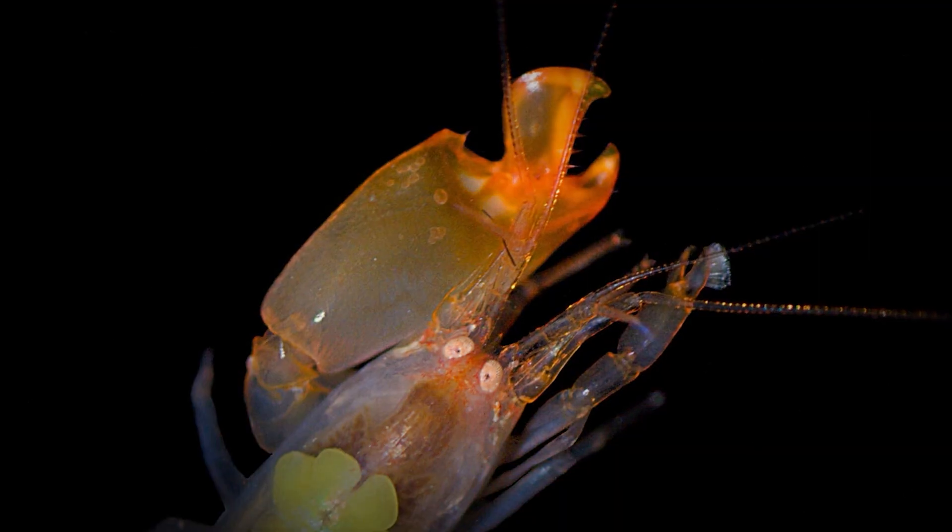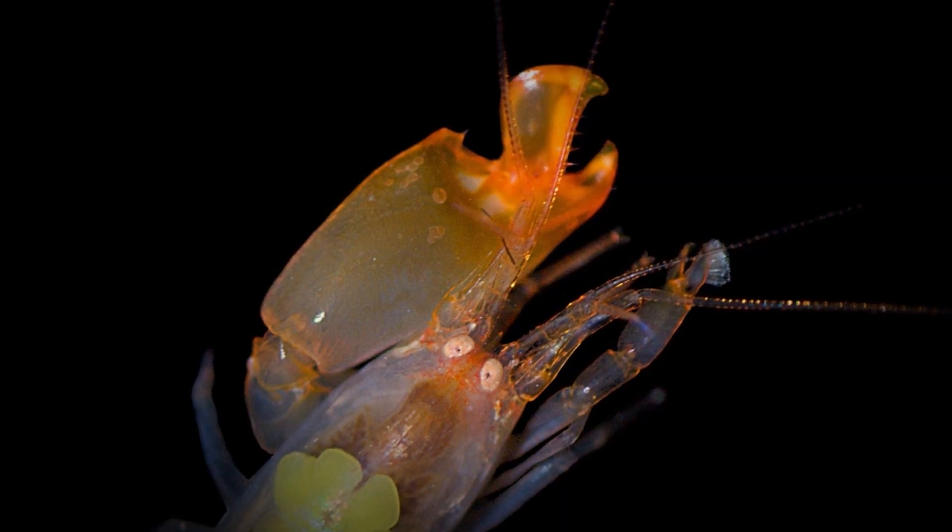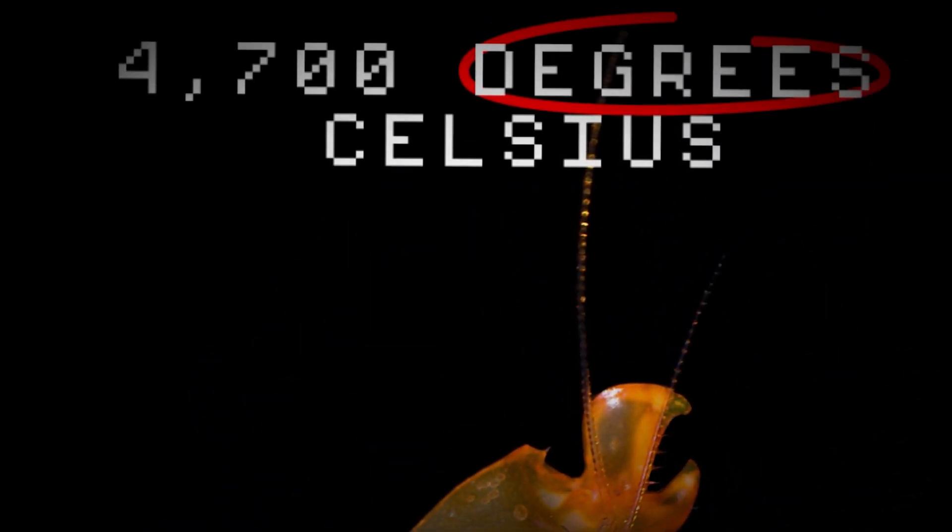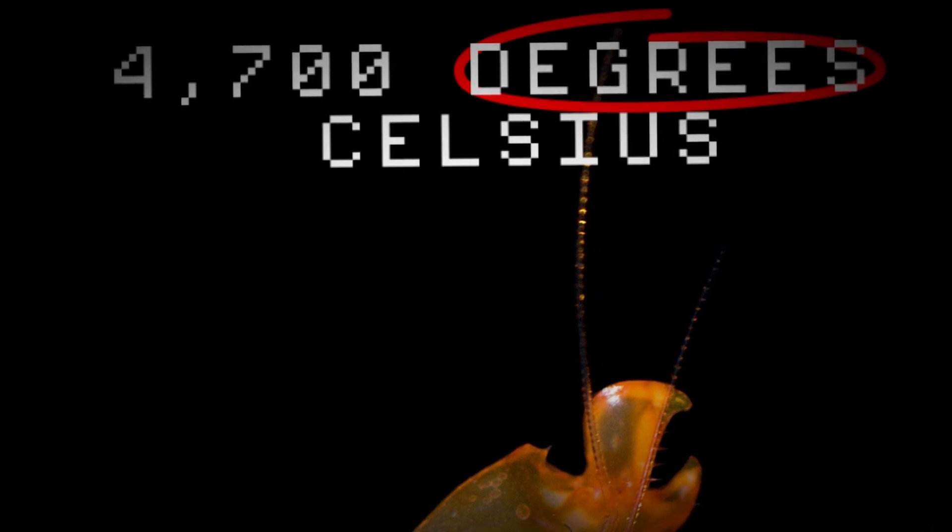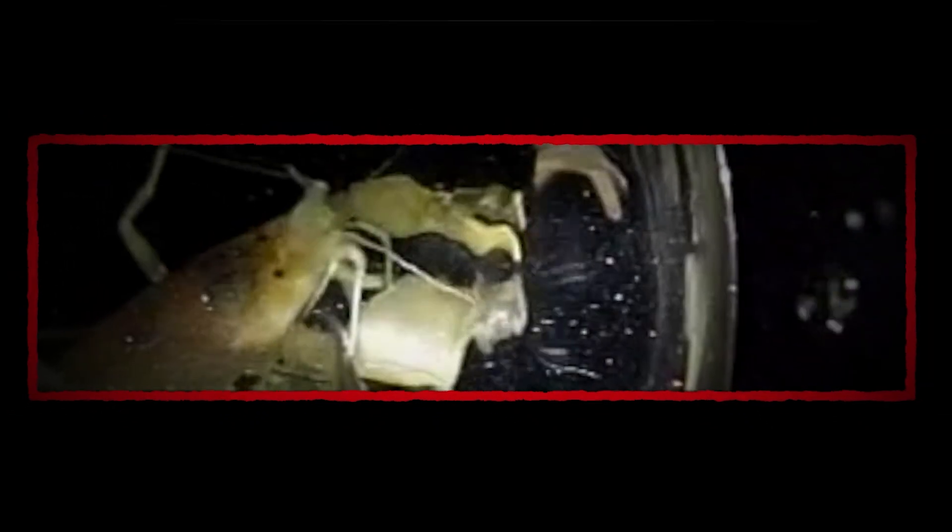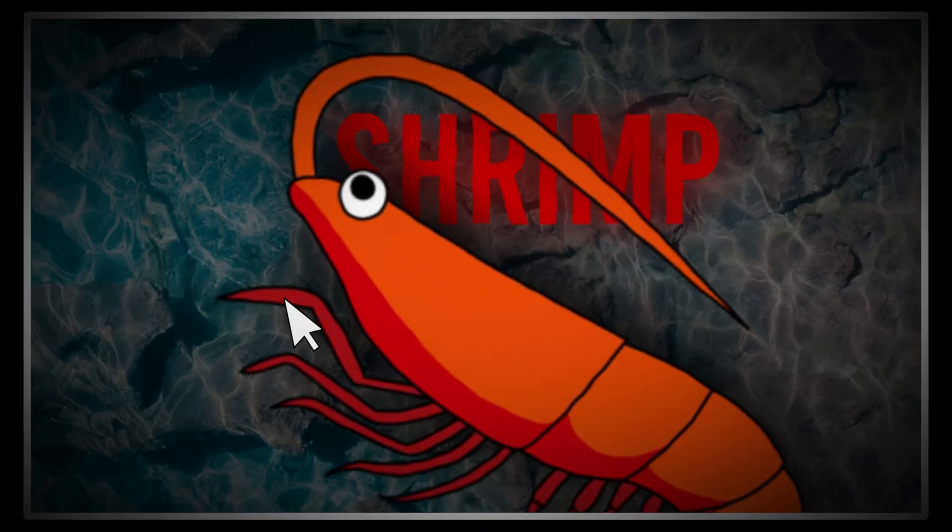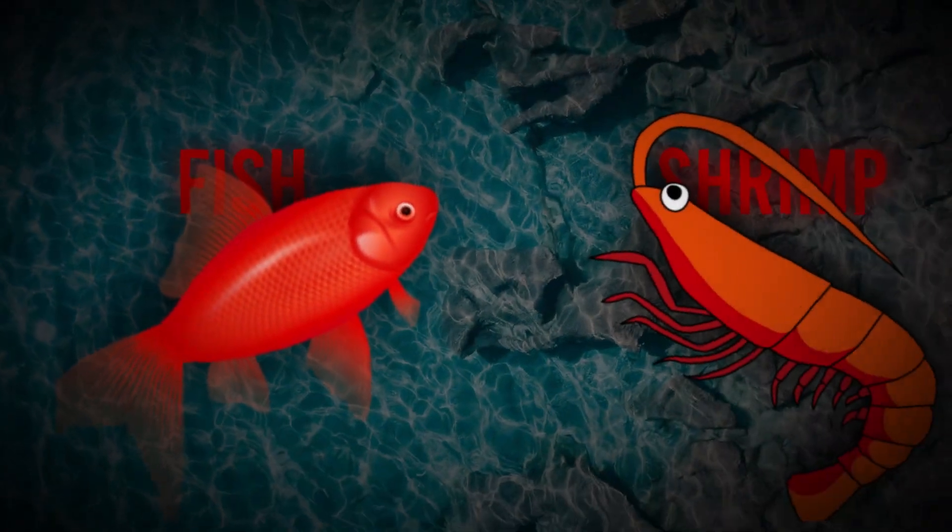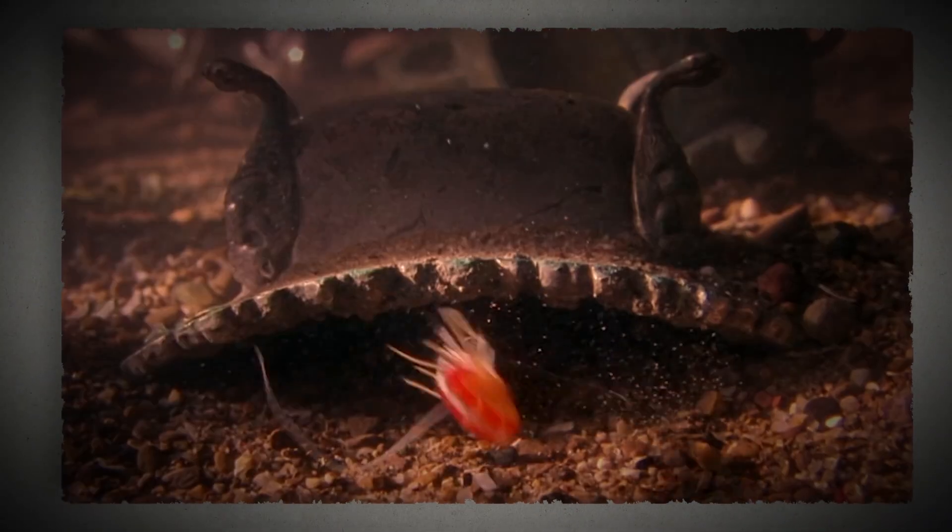And get this, the snapping claw of the pistol shrimp can create temperatures of up to 4,700 degrees Celsius. That's hotter than the surface of the sun, and it's enough to create a tiny bubble of plasma in the water that emits a flash of light and a loud popping sound. When an unsuspecting shrimp or fish comes by, the pistol shrimp strikes with lightning-fast speed, then quickly grabs its stunned meal and pulls it back into its burrow to devour.